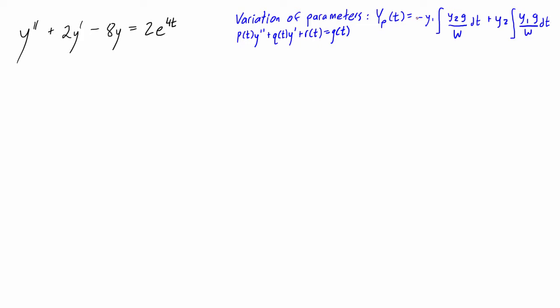I've just written it up here. Basically, when we use the variation of parameters method, all we're doing is finding a particular solution by using this expression here. Y1 and Y2 are a fundamental solution set to the original differential equation that we're going to find here first off.